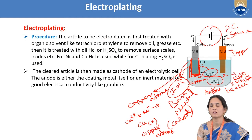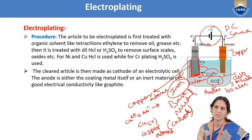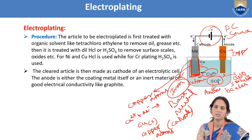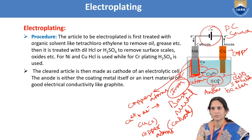Electrolysis involves taking two electrodes in a beaker of electrolyte — for example, copper sulfate solution — and connecting them to a circuit. When direct current is passed, the copper sulfate decomposes into ions: Cu²⁺ cations move toward the cathode and SO₄²⁻ anions move toward the anode. This electrolysis process is exactly what takes place in electroplating. At the anode, oxidation (loss of electrons) takes place; at the cathode, reduction (gain of electrons) takes place.